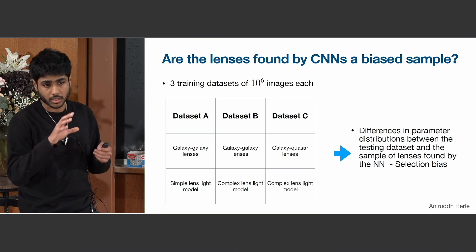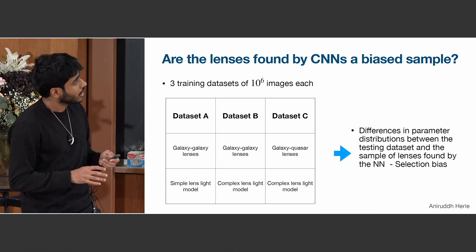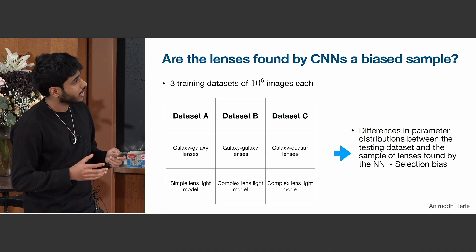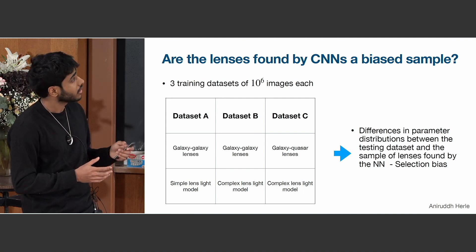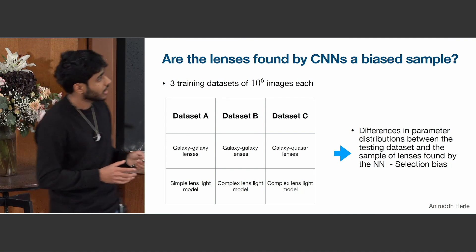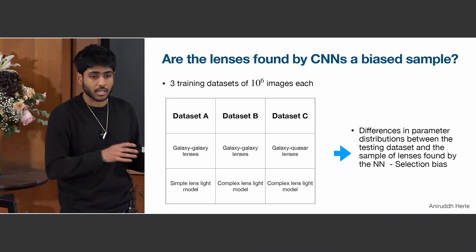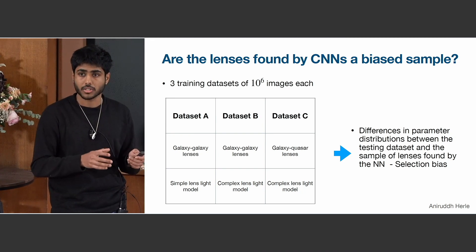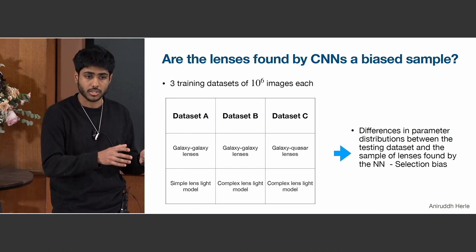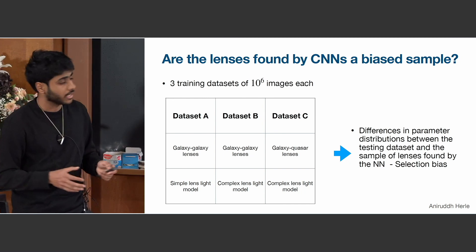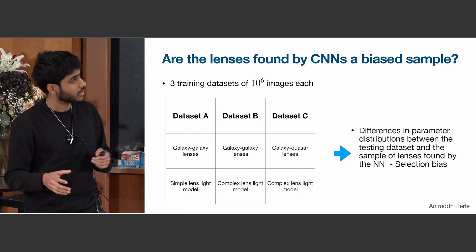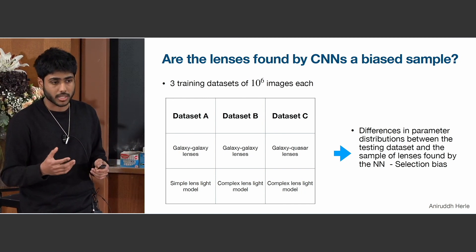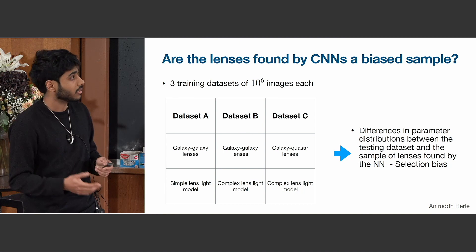The idea is to train a ResNet-18 on each of these datasets and then look at how the distributions of parameters differ between the true distribution — which is the test dataset — and the sample that the neural network selects. We quantify this difference via the KL divergence.